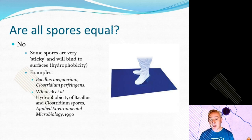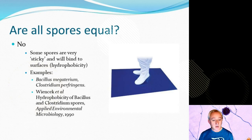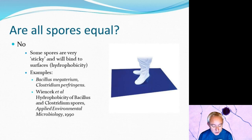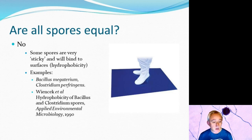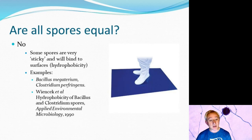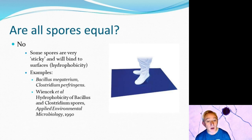By sticky, I mean the ability to bind to surfaces — hydrophobicity — the strong physicochemical bonds that attract a spore to a surface. Some species are more challenging than others. Examples of very sticky spores are Bacillus megaterium and Clostridium perfringens. This stickiness may also increase resistance, as demonstrated by the study cited on the slide by Wiencek et al., titled 'Hydrophobicity of Bacillus and Clostridium spores,' which is well worth reading.